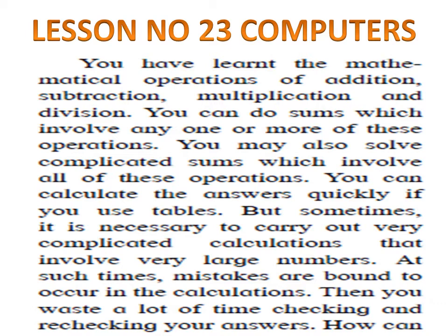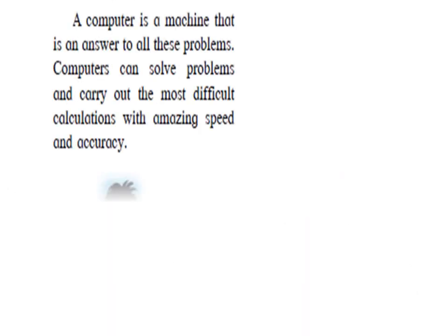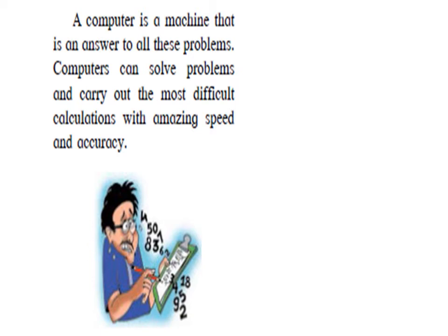To avoid these errors and wastage of time, we have a machine called a computer. A computer is a machine that is the answer to all these problems — it can solve problems quickly. On computers we can solve the most difficult calculations with amazing speed and accuracy. Accuracy means exactness, means correctness. Amazing speed means astounding speed.